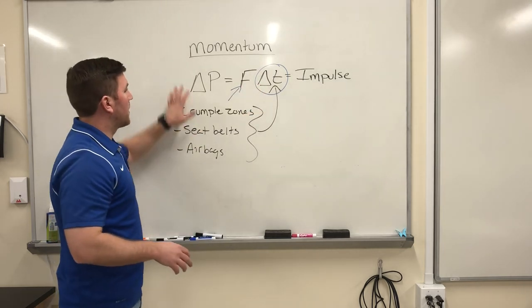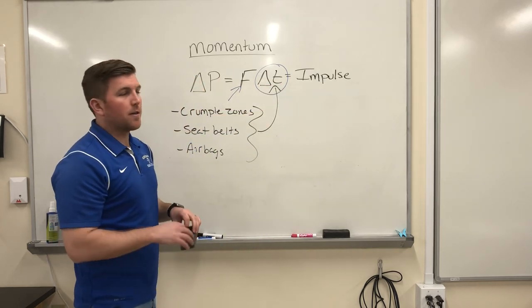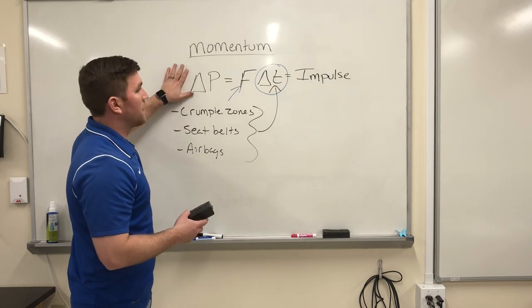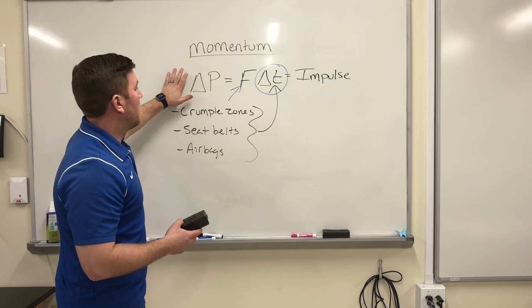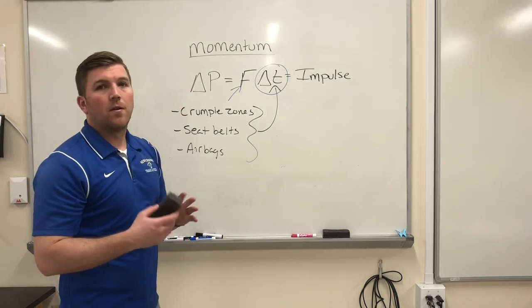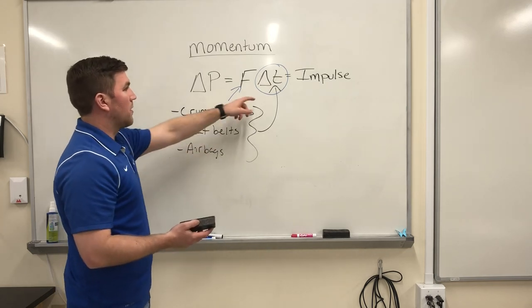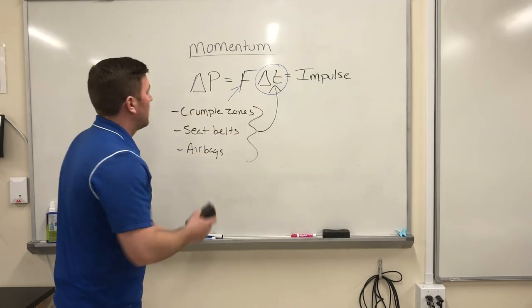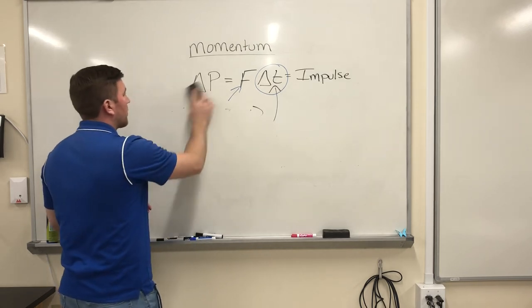Any time you have a change in momentum, it is an impulse. So as you start to build your egg drop projects, this is the key. This is the key thing that you want to keep in mind. Cars have crumple zones, they have seat belts, they have airbags. What should you put in an egg drop project to make sure that you're raising the amount of time it takes for your egg to stop? If the force is high, the egg is going to break.